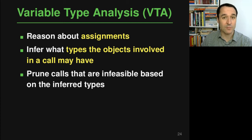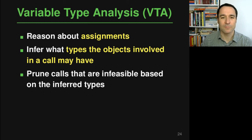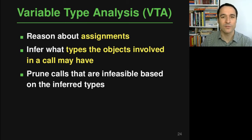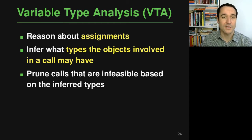For example, if you know the type of a base object of a call, then you can rule out some call targets that are not possible because it's simply not one of the types that you know the base object to have. By knowing this type information, the variable type analysis algorithm can prune calls and nodes from the call graph that are infeasible at runtime.